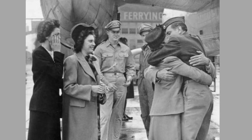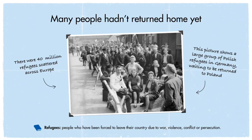Here we can see families reunited after the war. But many people hadn't returned home yet — there were many refugees who were scattered all across Europe. They'd had to leave their homes during the war because it wasn't safe. Here we see some Polish refugees at a refugee camp in Germany, and they were waiting to be returned to Poland. Many people had been held in concentration camps, and they also were released and allowed to go home or start new lives.